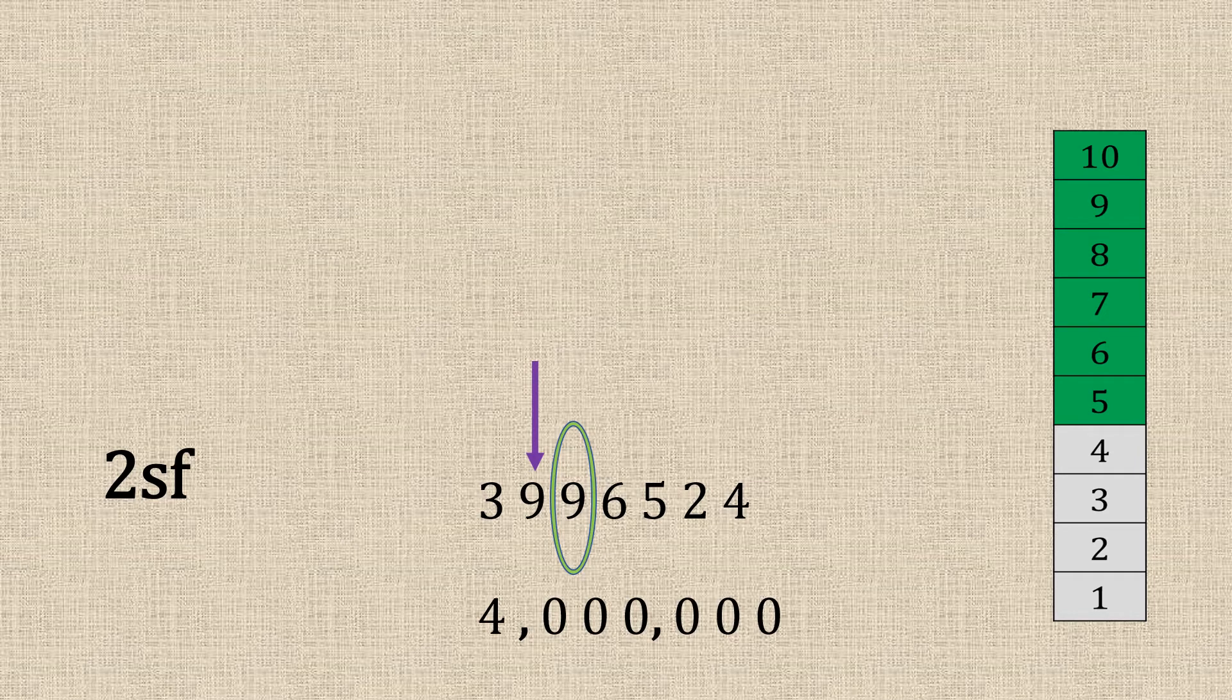And as you can see, we'd leave these zeros in because you need to keep the value of the number. And we put those little dashes in to show the thousands.